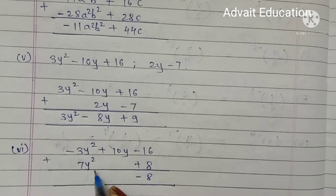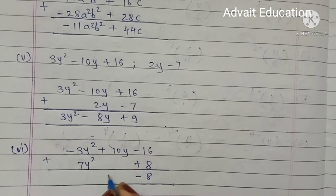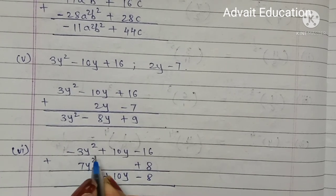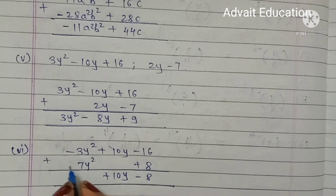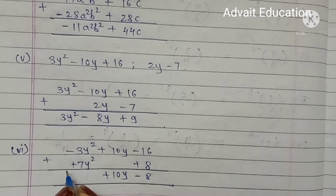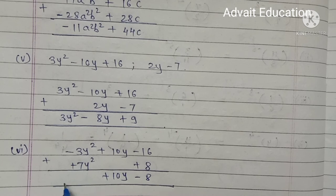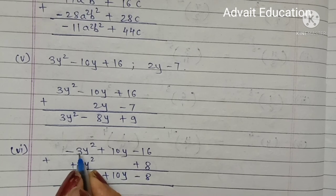There is no 10y term in the second equation, so plus 10y as it is. 7y² has positive sign. Plus minus minus, sign of bigger number is 7: 7 minus 3 equals 4y². Your answer is 4y² plus 10y minus 8.